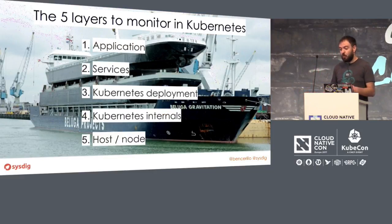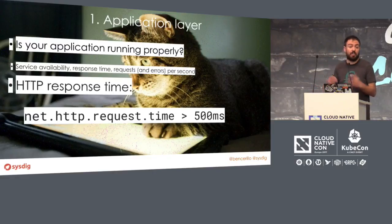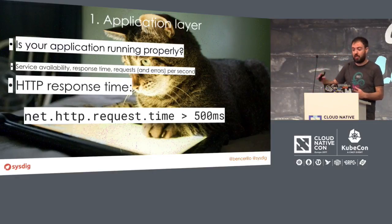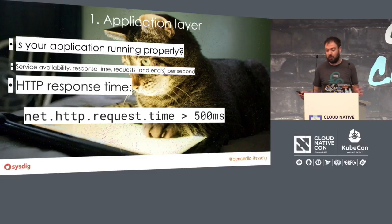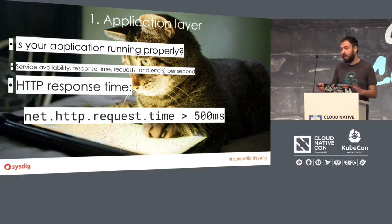We have at least five layers to monitor when bringing Kubernetes into production. First is the application. Application monitoring is not different from what we were doing before — the top working metrics. We just need to make sure your application is working. There are quite a few things we could monitor, but most people are monitoring request time. If the application is fast, it works — that's great.